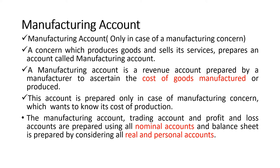A manufacturing account is a revenue account prepared by a manufacturer to ascertain the cost of goods manufactured or produced. A trader or manufacturer normally prepares this account to know the cost of goods produced. This account is prepared only in the case of a manufacturing concern which wants to know its cost of production. Here we have to take into consideration different direct expenses, then opening stock of raw material, then add net purchases, then add direct expenses for manufacturing a product, and also consider closing stock and sales.